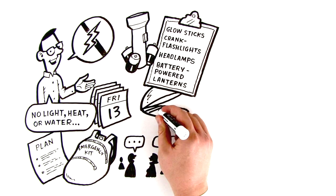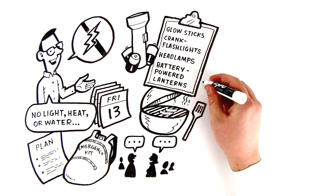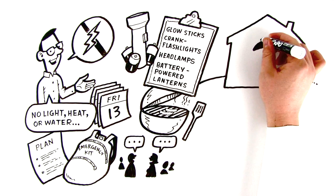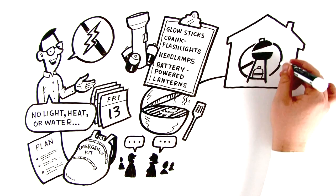Fireplaces, wood stoves, barbecues, and camp stoves can be used for emergency cooking. Just remember, never use barbecues or camp stoves indoors where they pose a fire and carbon monoxide hazard.